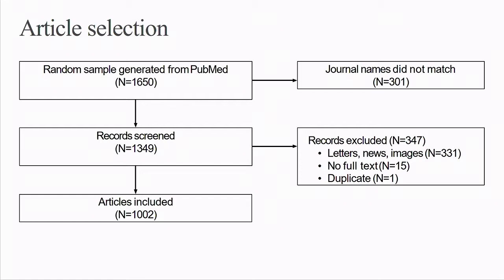We randomly sampled articles published during 2016 in biomedical journals listed in PubMed and reporting conformance to the International Committee of Medical Journal Editors' editorial policies. We included 1,002 articles based on an expected proportion of 20% of articles and a predefined target sample size. We included primary research articles, but also commentaries, editorials, narrative reviews, systematic reviews, and meta-analyses.